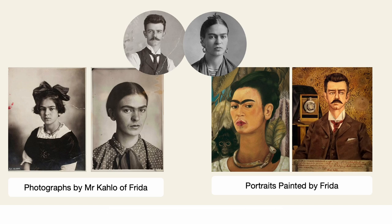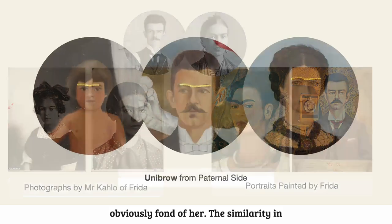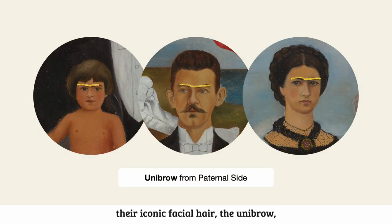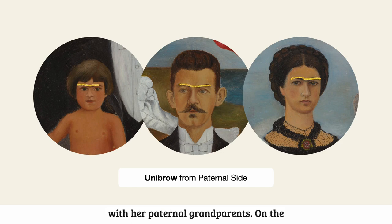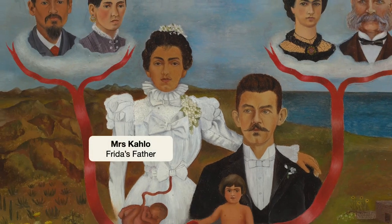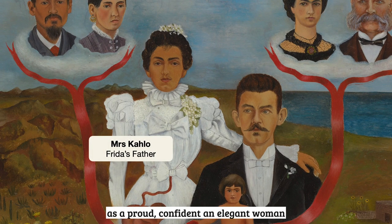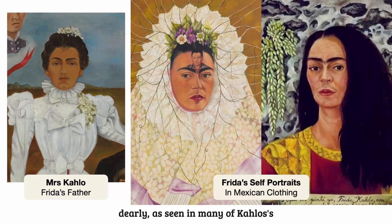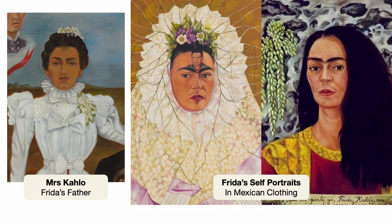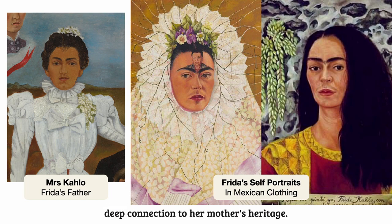He regarded Kahlo as the smartest of his daughters and was obviously fond of her. The similarity in their iconic facial hair — the unibrow — suggests that Kahlo also identified more with her paternal grandparents. On the other hand, Kahlo's mother is depicted as a proud, confident, and elegant woman who holds onto her Mexican heritage dearly, as seen in many of Kahlo's cultural portraits where she wears traditional Mexican dress. Her pride in her culture reflects Kahlo's own deep connection to her mother's heritage.